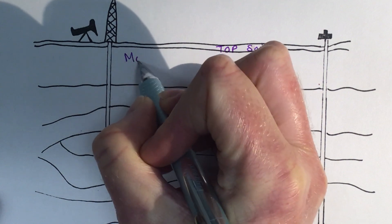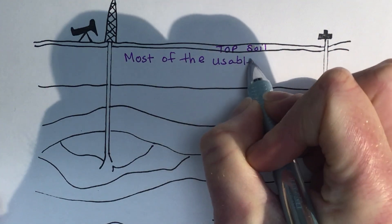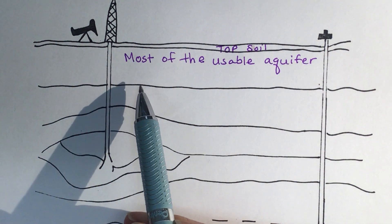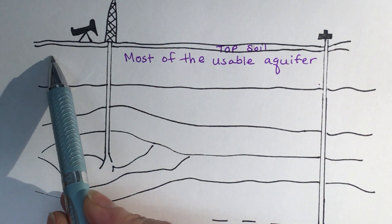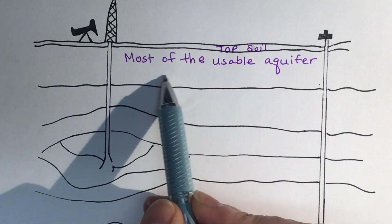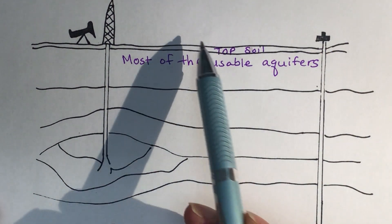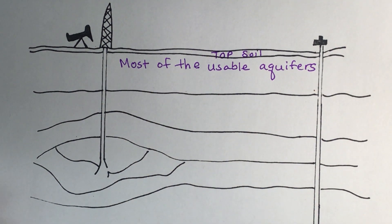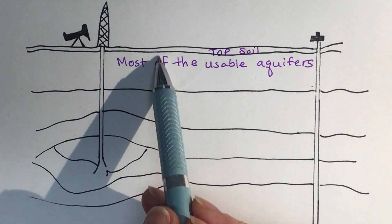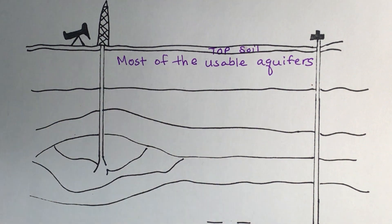In the next layer we have most of the usable aquifers. Normally when we draw out aquifers, we would draw several layers running through the ground — some higher aquifers and some lower aquifers. For this diagram you just need to know that near the surface are most of the aquifers usable by people. There are some deeper ones that people have drilled wells to, but deeper aquifers are more expensive, so most people use aquifers closer to the surface.